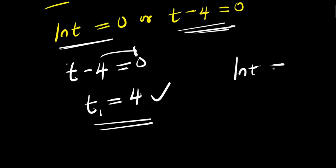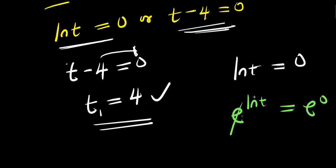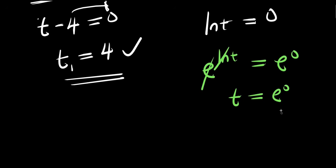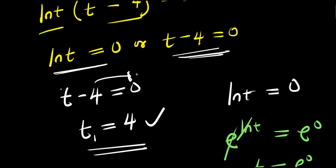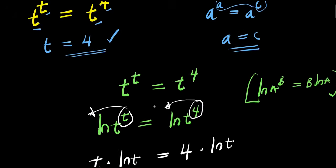Now solving ln(t) equals 0: raising e to both sides gives e to the power of ln(t) equals e to the power of 0. The e and ln cancel, leaving t equals e to the power of 0, which equals 1. So t equals 1 is our second solution. Those are the two solutions found using this method.